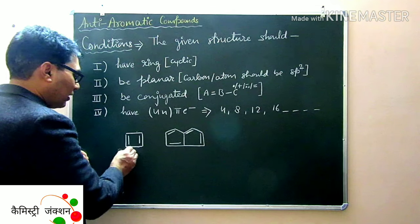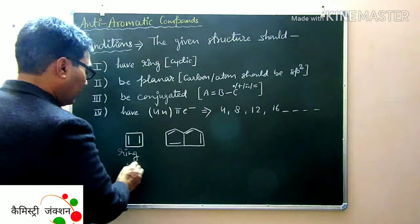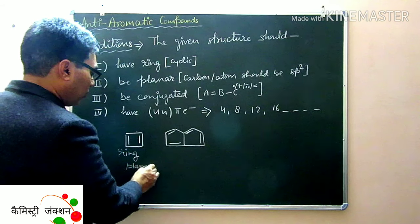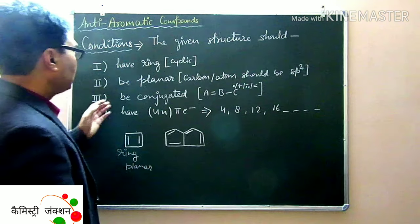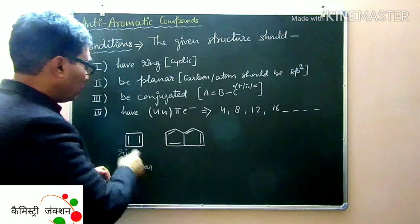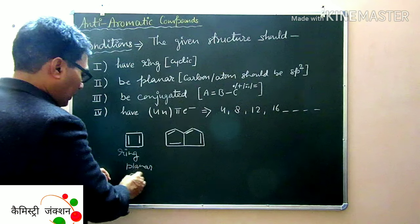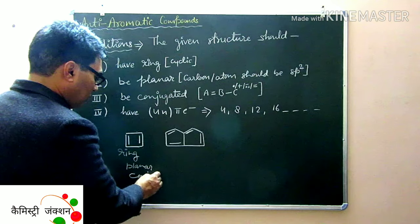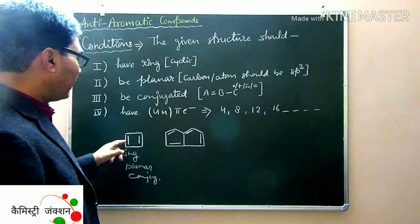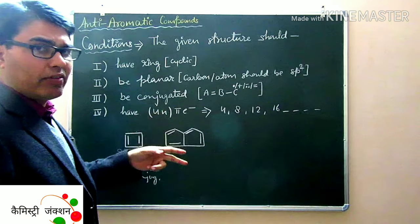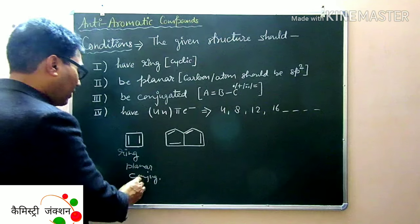Let's look at compound 1. It has a ring — it is a cyclic structure. It is planar in nature. All four carbons are sp2 hybridized. It has conjugation: double, single, double, single. How many pi electrons are there? One double bond is equivalent to 2 pi electrons, so there are 4 pi electrons total.